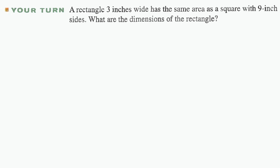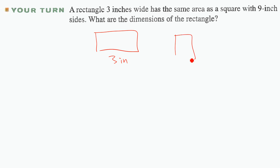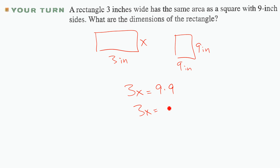Your turn: a rectangle 3 inches wide has the same area as a square with 9-inch sides. We don't know the rectangle's length, so: 3x = 9 × 9 = 81. Divide by 3: x = 27.